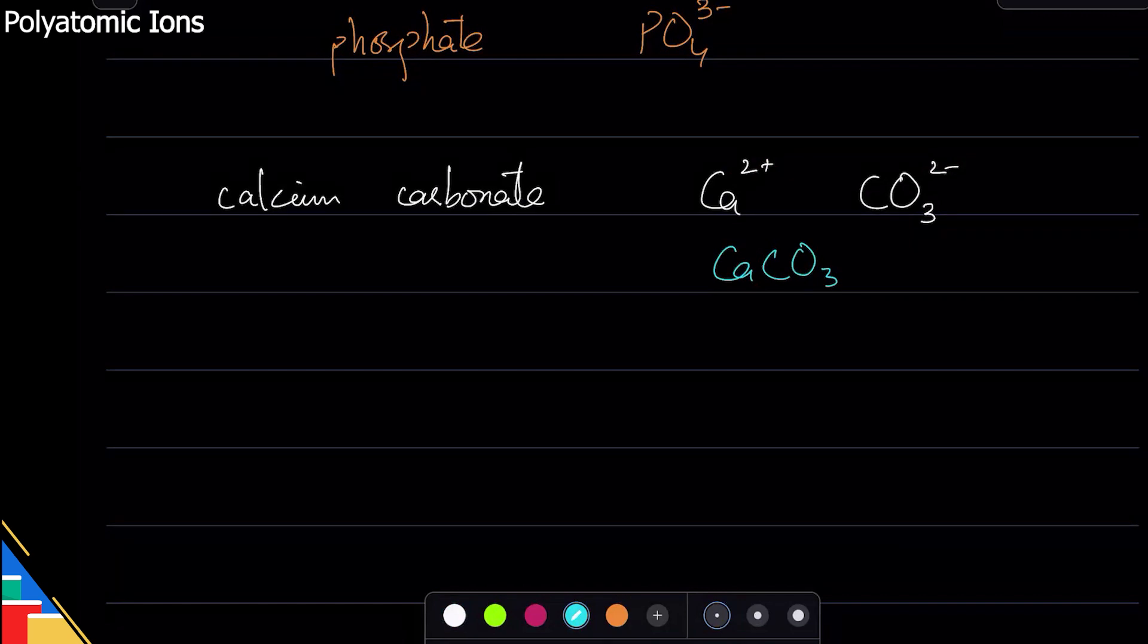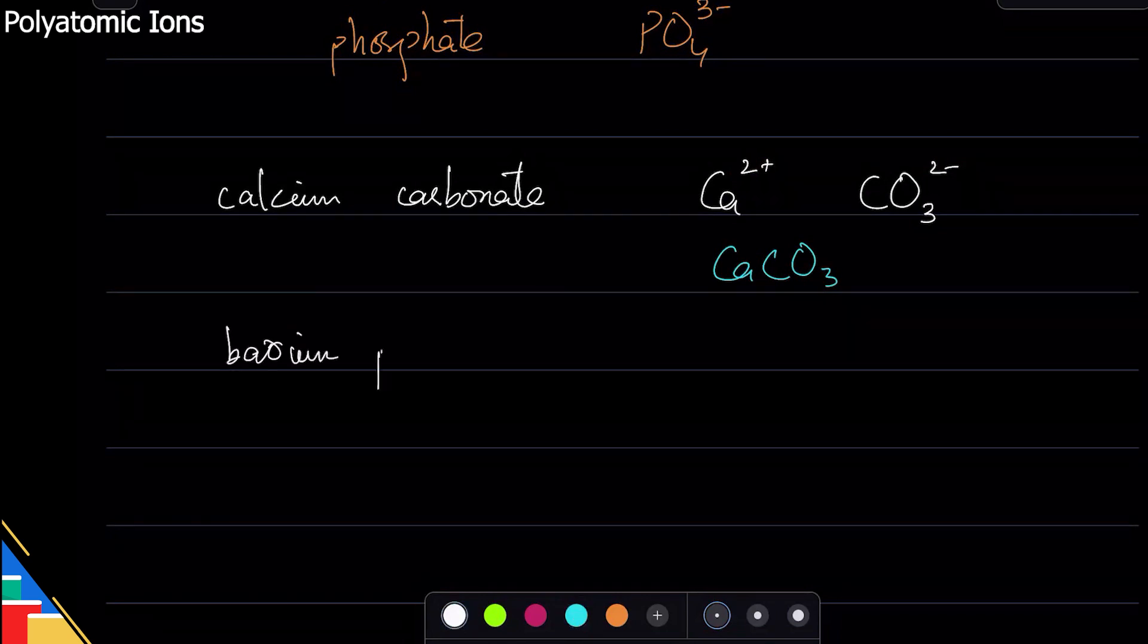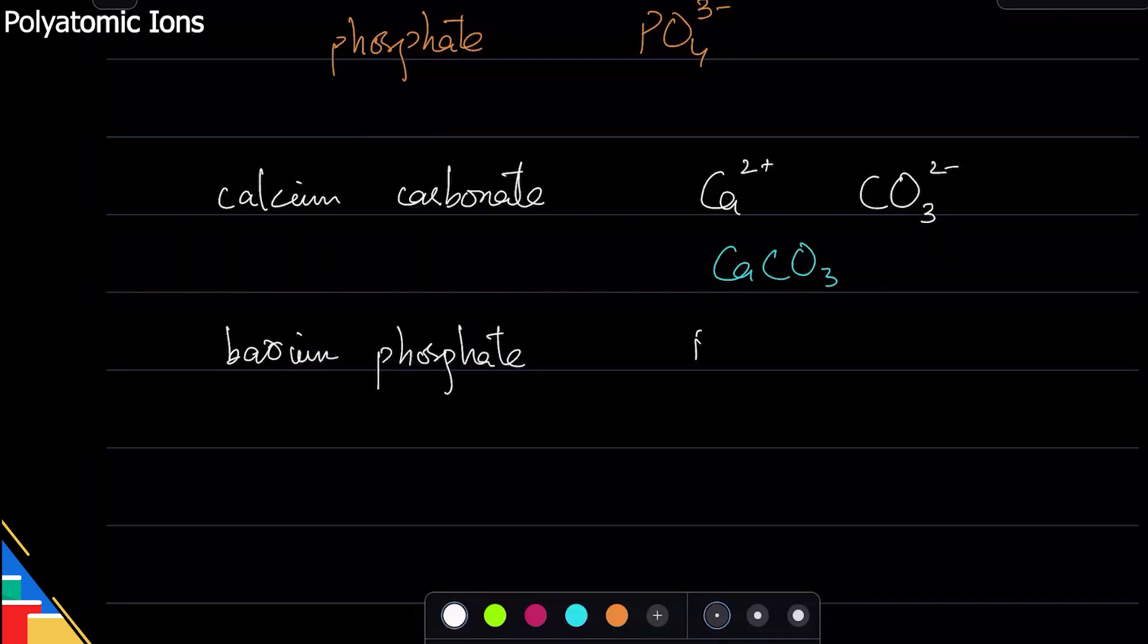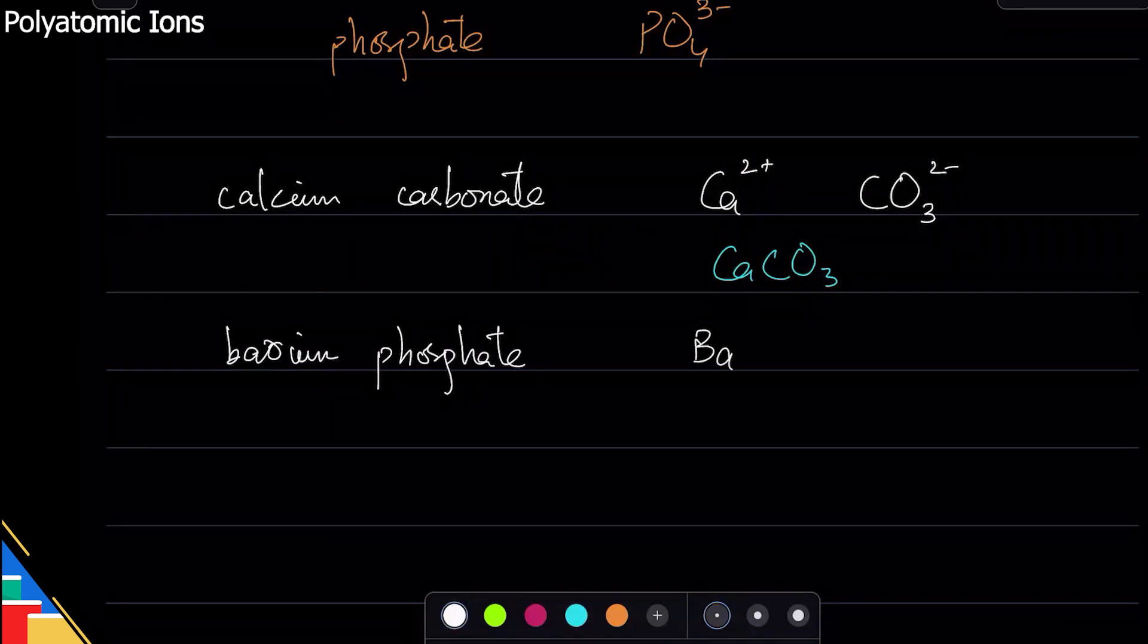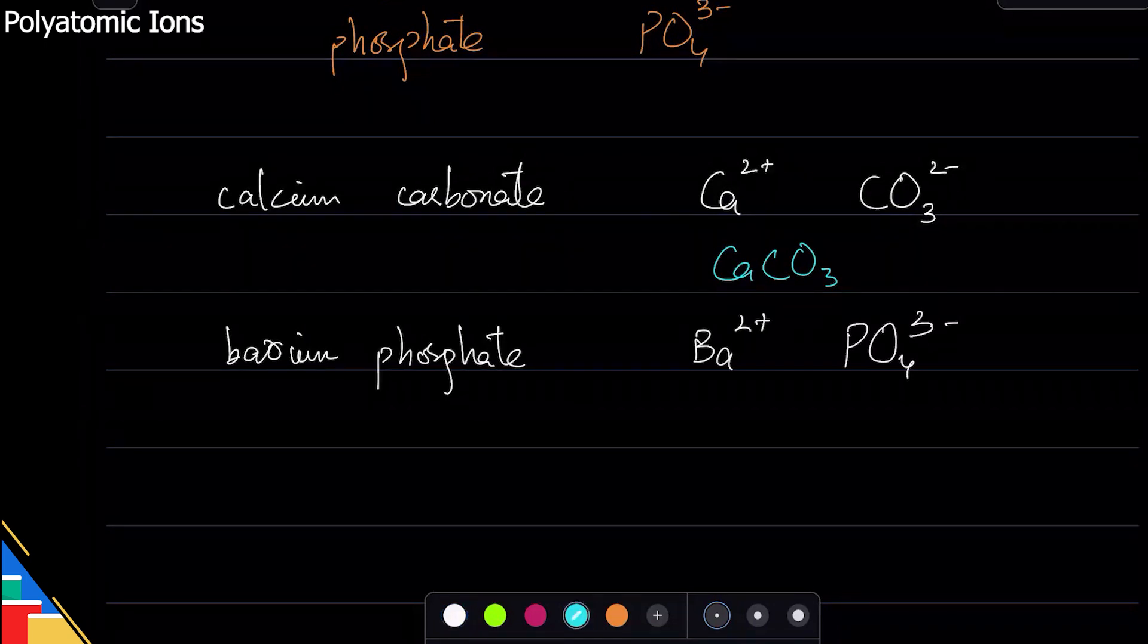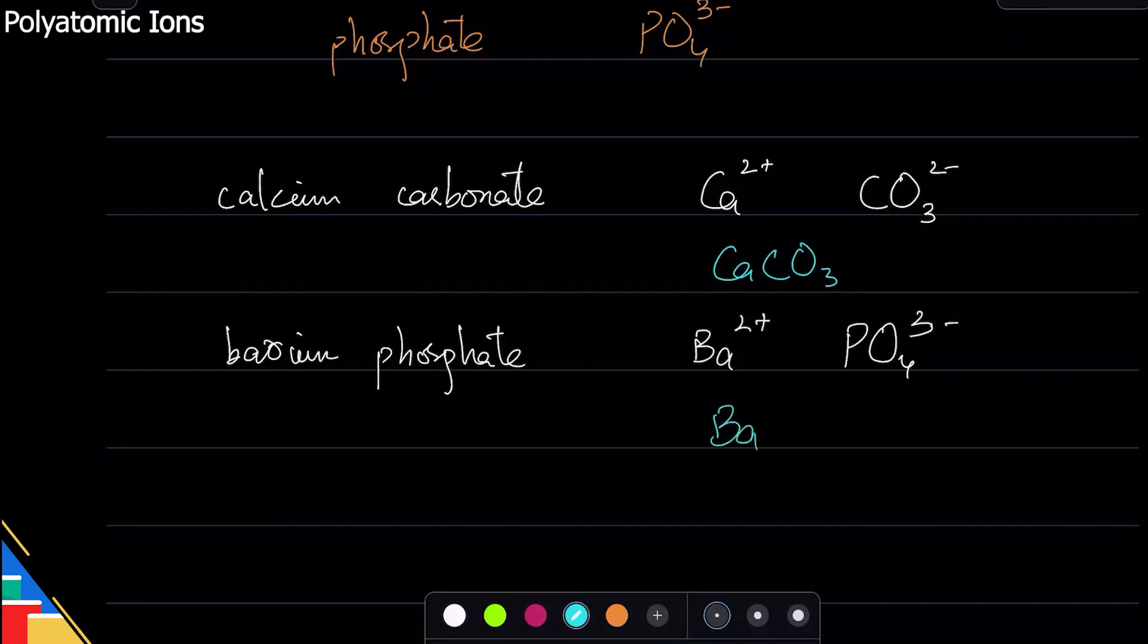Now let's say we need to do a ratio with them. I have this other example - barium phosphate. Barium is Ba, it's in group two so it must be plus two. And phosphate I know is this one, I just need to remember it. So PO4 with negative three. The ratio flip will need to happen.